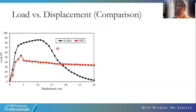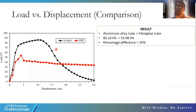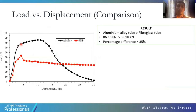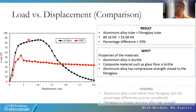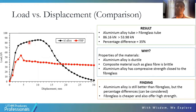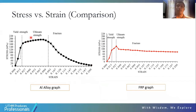The load versus displacement results from the quasi-static compression test show that the peak load of the aluminium alloy tube is higher than the fiberglass tube: 86.16 kN compared to 53.98 kN, with a percentage difference of only 35 percent. This is due to aluminium alloy being ductile while composite materials such as glass fiber are more brittle. Aluminium alloy has compressive strength close to fiberglass, and while aluminium alloy is still better, the 35 percent difference is relatively low, and fiberglass is cheaper while offering high strength.